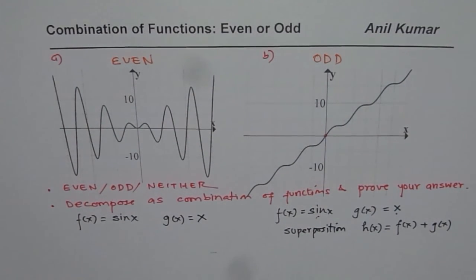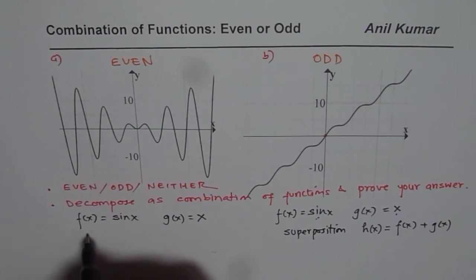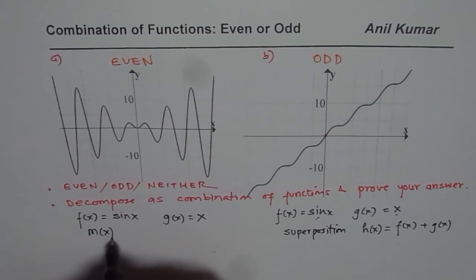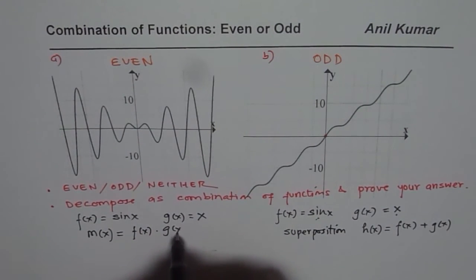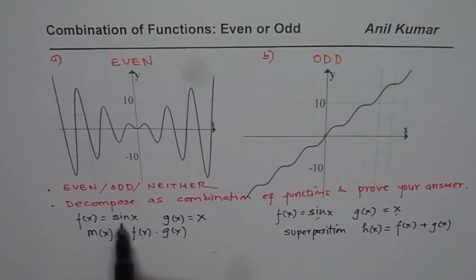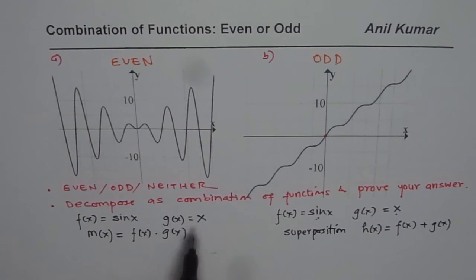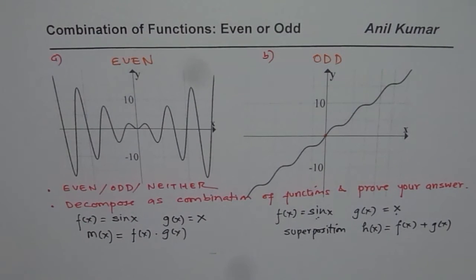So the function is g of x equals to x but in this particular case let me define the function as m of x which is f of x times g of x. It makes sense negative and negative when I multiply I get even function. Great. So this is what my function is. So what I have here is a combination of sinusoidal function and a linear function. Individually both are odd functions but when I multiply them I get an even function as you can see.